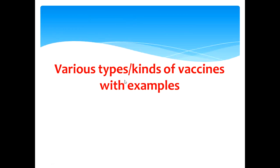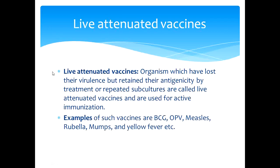The various types of vaccines: first, live attenuated vaccines — organisms which have lost their virulence but retain their antigenicity by treatment or repeated subcultures. These are used for active immunization. Examples include BCG, OPV (oral polio vaccine), measles, rubella, mumps, and yellow fever.